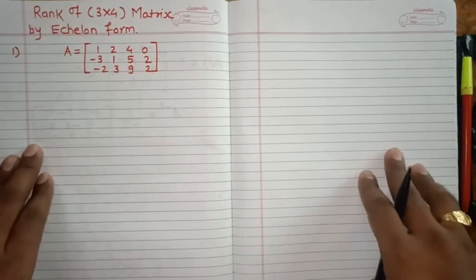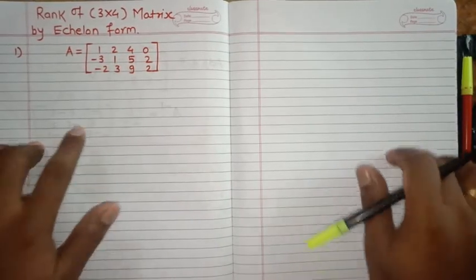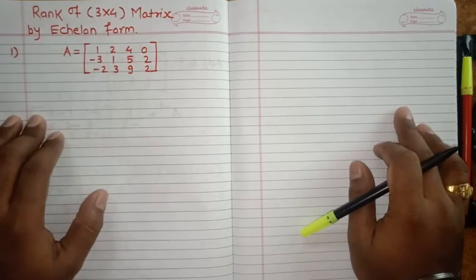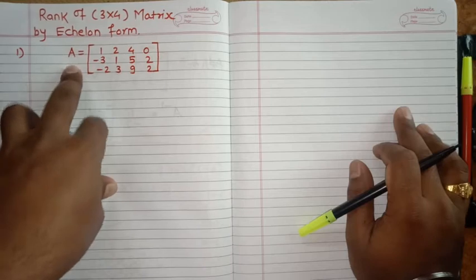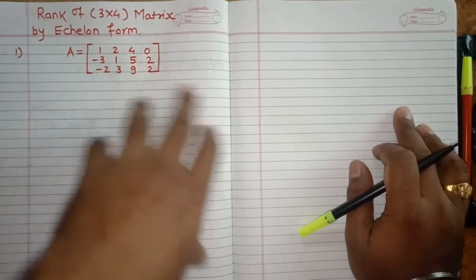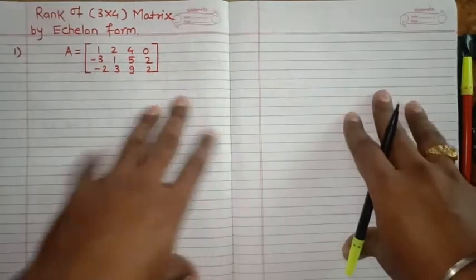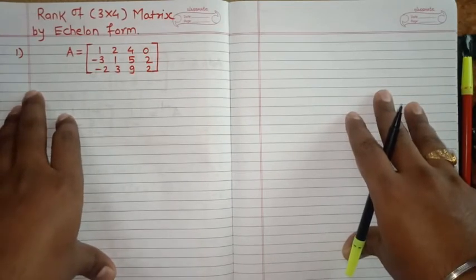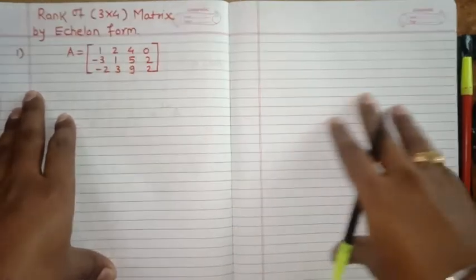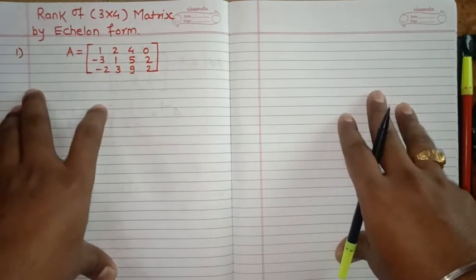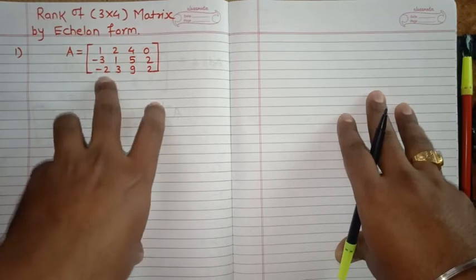Hello students, in this video we will learn how to find rank of a matrix by echelon form. Matrix A is given here of order 3 by 4. Generally, what is the rank of a matrix? Rank of a matrix is nothing but the number of non-zero rows. We have to perform elementary operations here and convert these rows into zero.